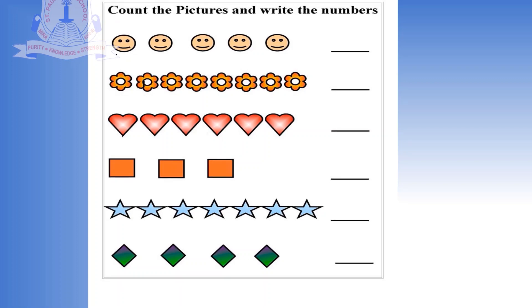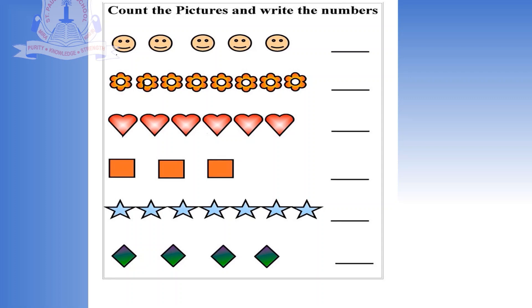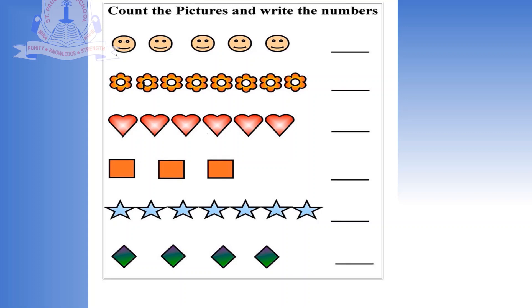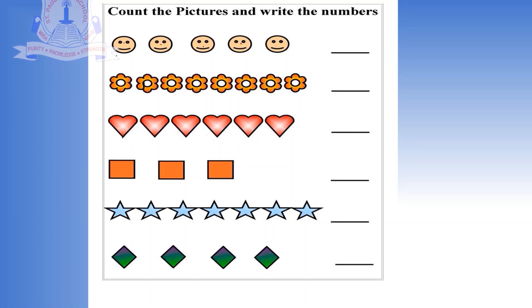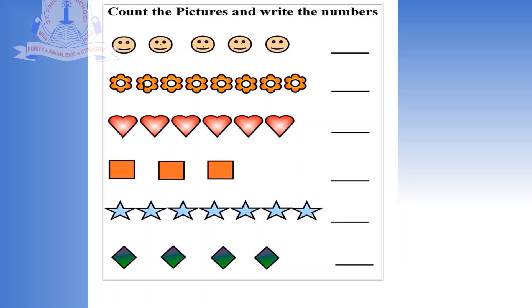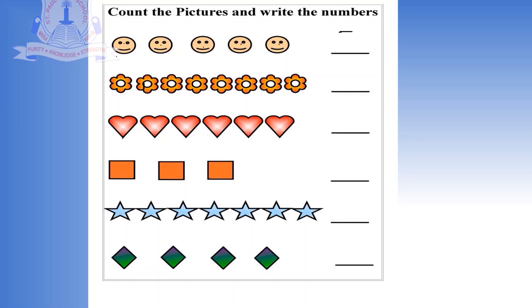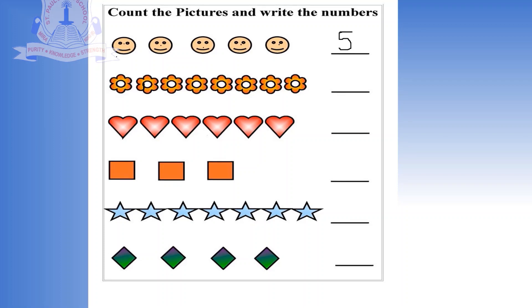So let's start counting. Which is the first object? Smileys. 1, 2, 3, 4, 5. So how many smileys are there? 5. So we have to write number 5 here. Let's move to the next object.